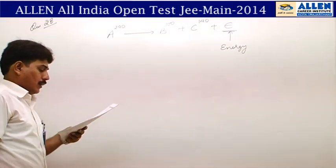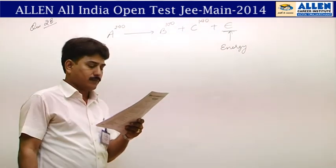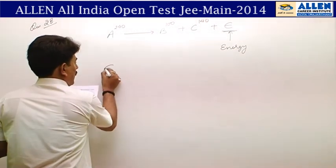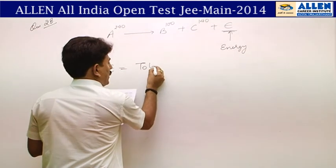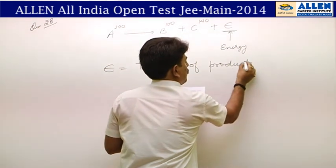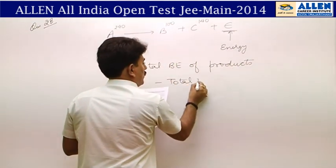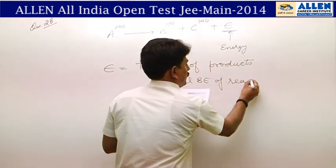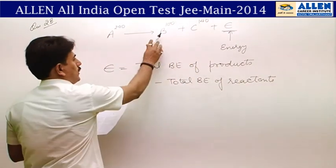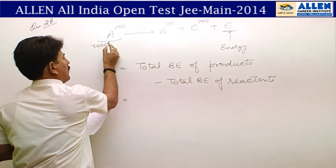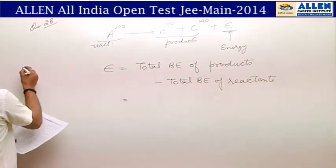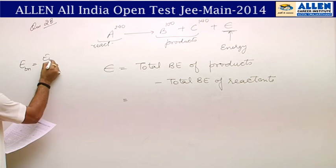Binding energy per nucleon for A, B, and C are 7.6, 8.2, and 8.8 MeV respectively. The value of ε equals the total binding energy of products minus the total binding energy of reactants.